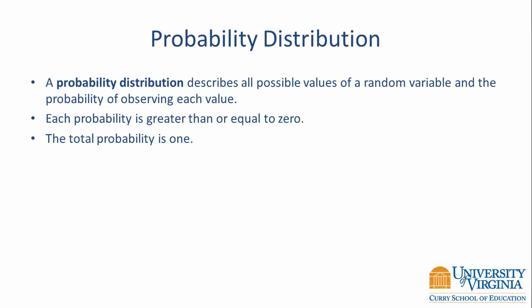In this particular example, we've actually created a probability distribution. A probability distribution describes all possible values of a random variable and the probability of observing each value. In this probability distribution, each probability must be greater than or equal to 0, and the total probability must be 1.